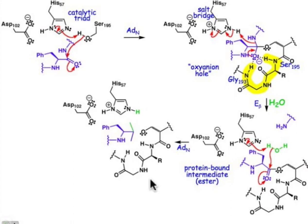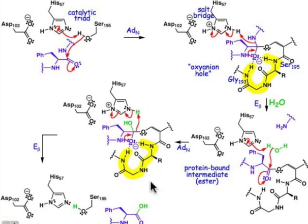The tetrahedral intermediate is formed, and we again have an oxyanion that's stabilized by what's known as the oxyanion hole. Finally, we turn the electron flow back around, do a beta elimination, and we have now released the carboxylic acid portion of the substrate. We've broken that peptide bond into two, added the elements of water across that peptide bond, and returned our catalytic triad residues back to their original form.